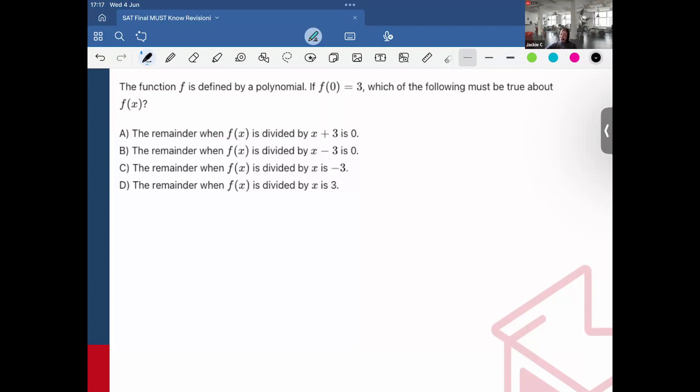But basically the remainder theorem is that whenever we have a polynomial f(x) and it's divided by whatever x minus a is, what the theorem says, the remainder is f(a). And you might be thinking, hey, that makes no sense. Well, let me give some examples to make it make more sense.